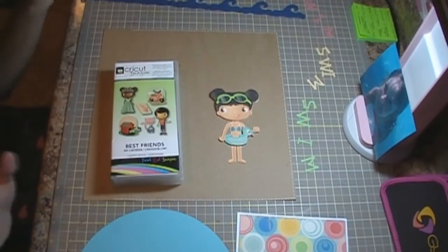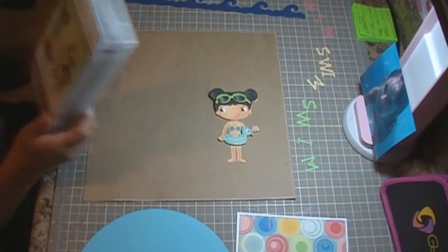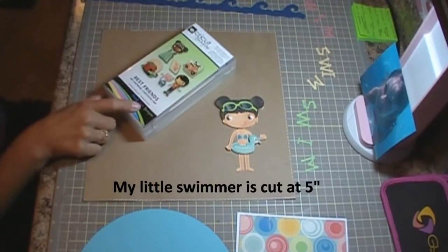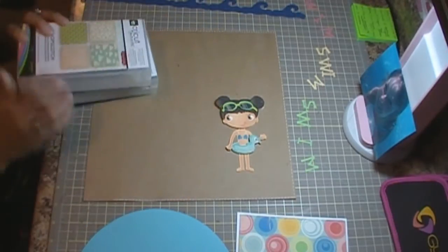But I just went with the flow of it, and I was like, fine, whatever, I'll just work around it, which is fine. So, I used the Best Friends cartridge, and I also used the Hopscotch cartridge. These are the two Imagine cartridges that I used for my layout today.